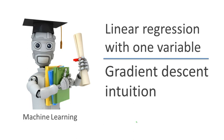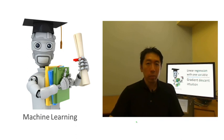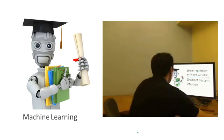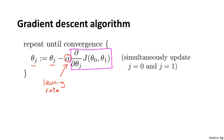In the previous video, we gave a mathematical definition of gradient descent. Let's delve deeper and in this video get better intuition about what the algorithm is doing and why the steps make sense. The parameter alpha is called the learning rate and it controls how big a step we take when updating parameters theta j. The second term here is the derivative term.